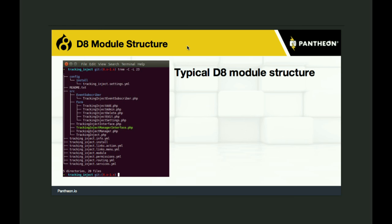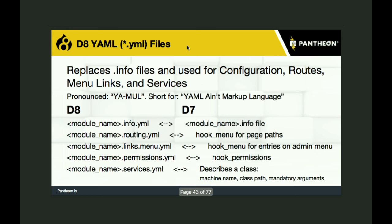A typical Drupal 8 module structure — at the topmost level there are a bunch of YAML files. Then there's a config directory and a source directory. In the config directory is the YAML file that has your default settings when the module is enabled. In source is everything else built for this module — all of your class files. This directory structure is not optional; it's mandatory because the framework looks in your source directory and wants to know if you have an event subscriber, a form, etc. If they're not in this directory structure, they won't be found.